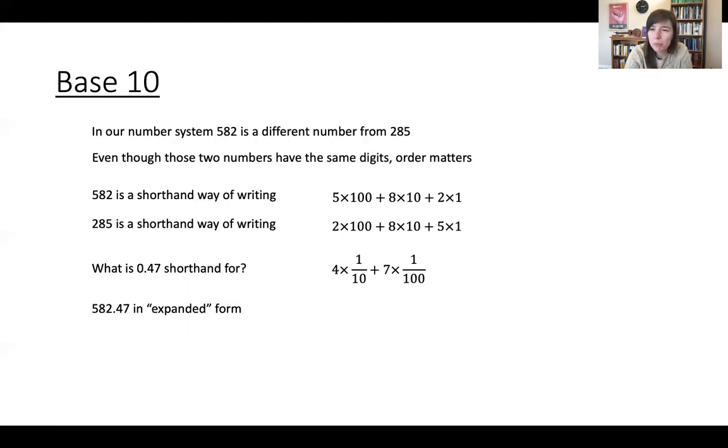So here's an example of a problem you might see in the homework or in your practice problems. Something like write 582.47 in what we are calling expanded form. And so that is just taking all of these digits and writing them out as what they are multiplied times these powers of 10. So this would be the correct answer for writing 582.47 in expanded form.